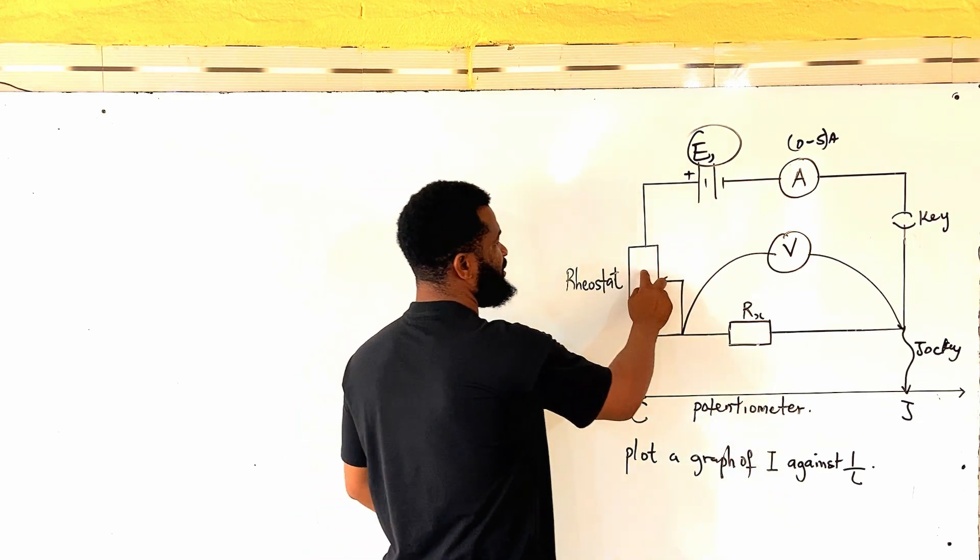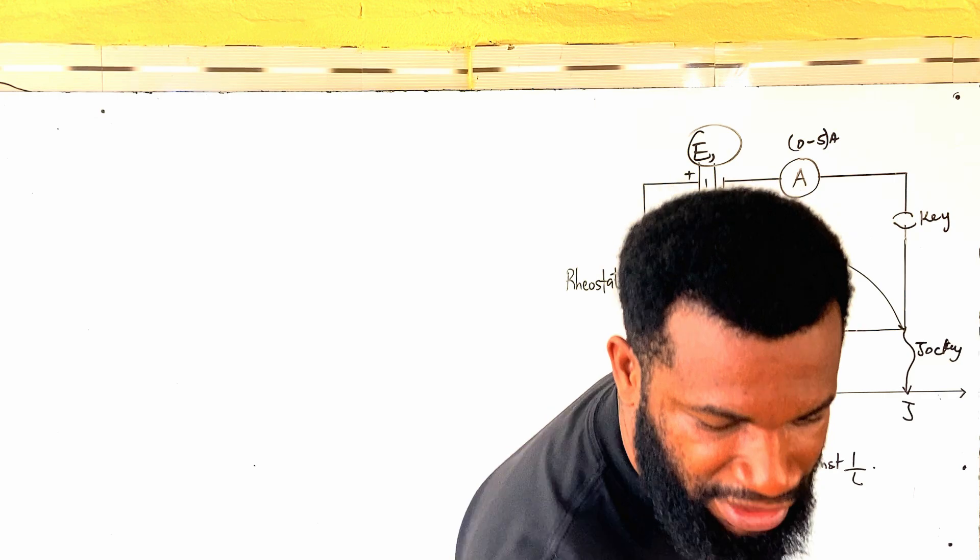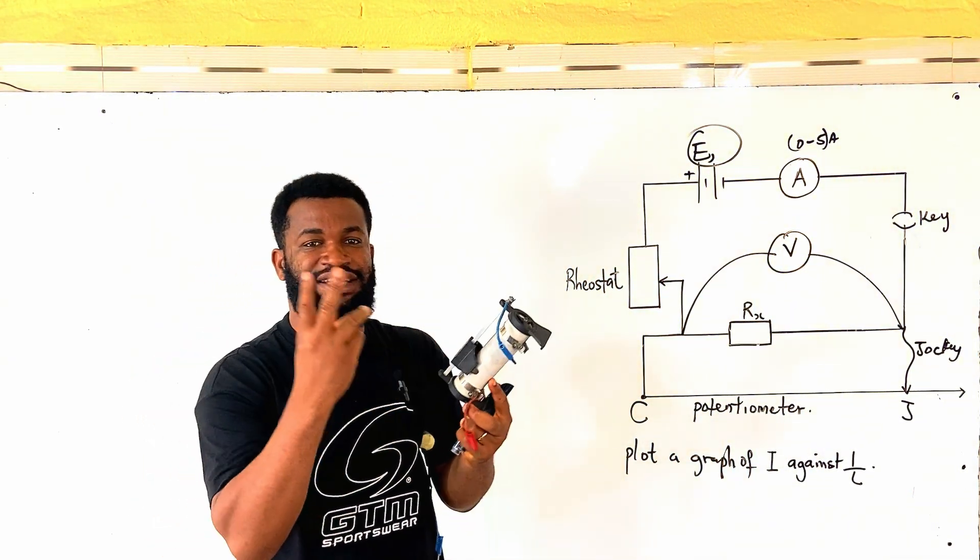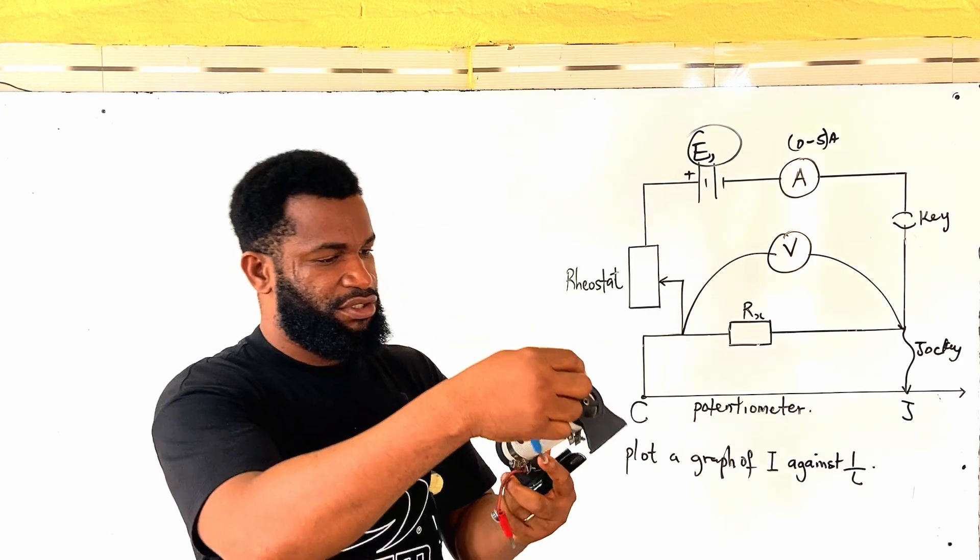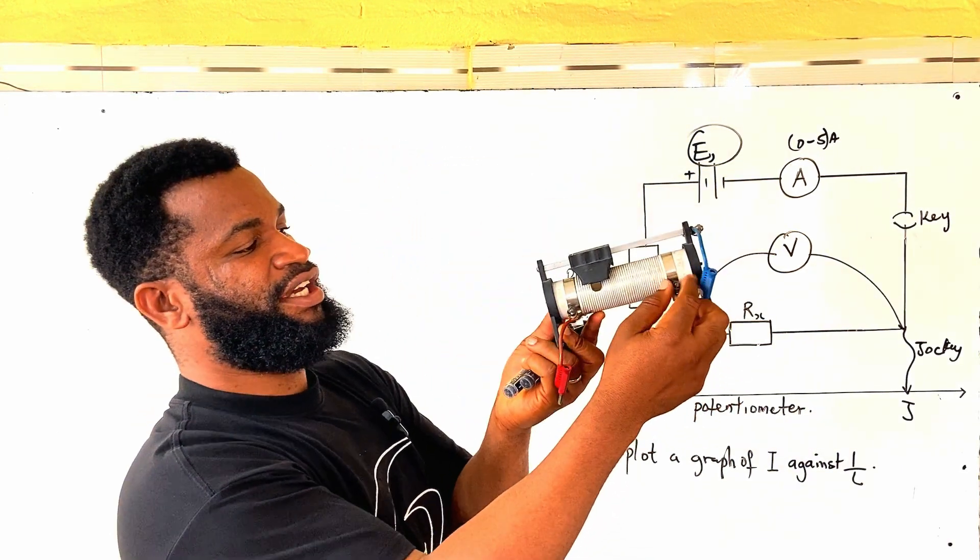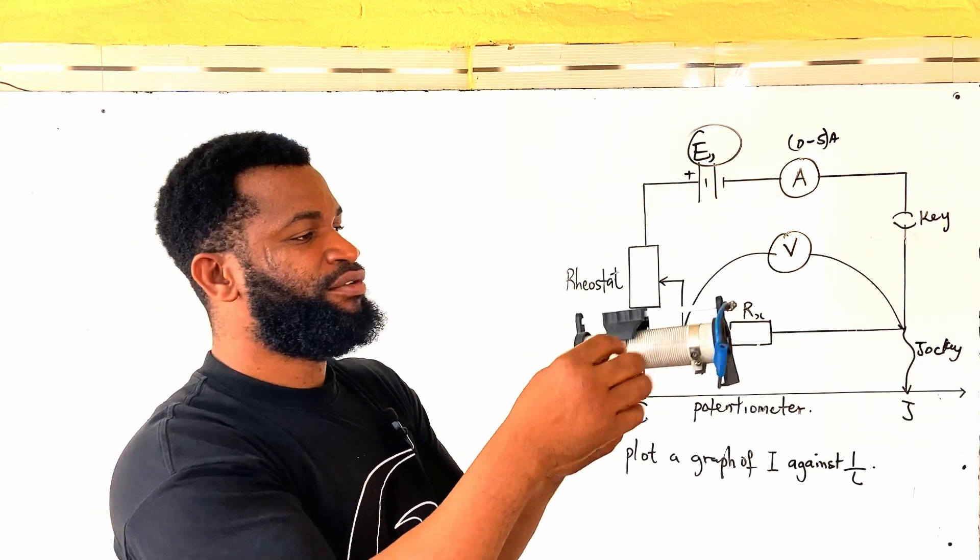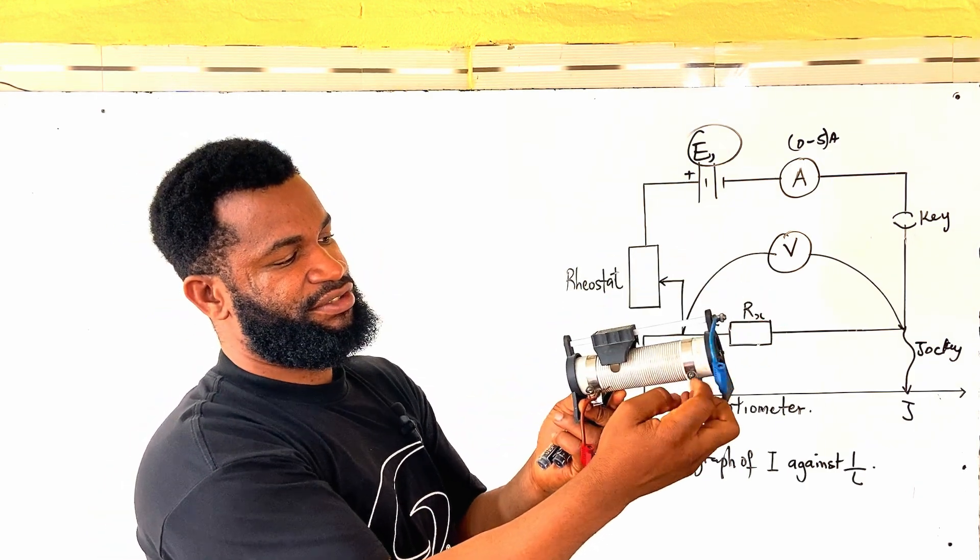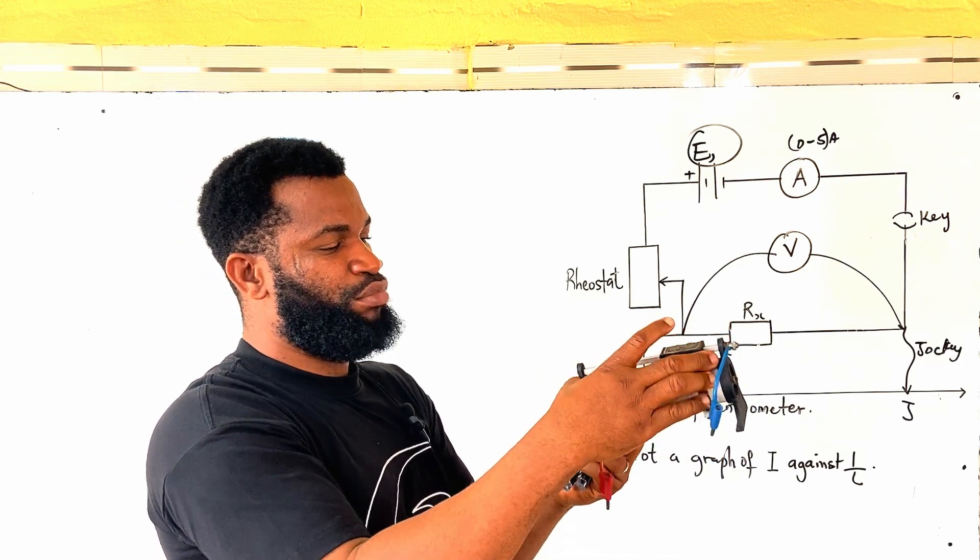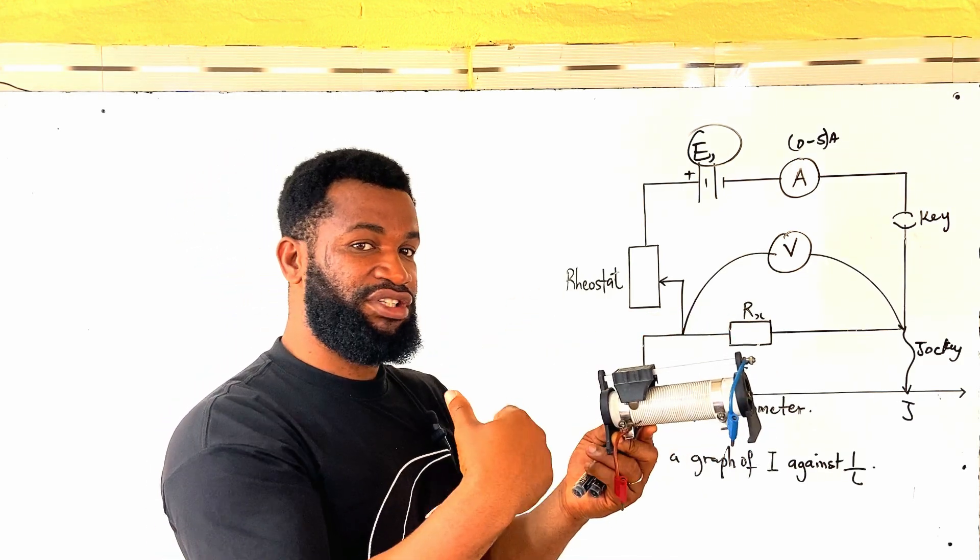If this is a rheostat, I connect it to this. Now let me show you what I mean, this is a rheostat. Now, rheostat has 3 terminals. There is a terminal here, there is a terminal here, and there is another terminal here, so you can still connect it here. When you connect it that way, you can move this, and move this, to increase or decrease.